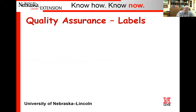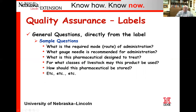A lot of your youth have possibly done some quality assurance training if they are showing at state and county fairs, so we're going to incorporate a little bit of basic quality assurance. The first one is related to labels. We would envision potentially having a label from a particular pharmaceutical — whether that be an antibiotic, a vaccine, or a deworming product — and simply ask them a series of questions. They need to be familiar with the label, what's on the label, where to maybe look for some things.